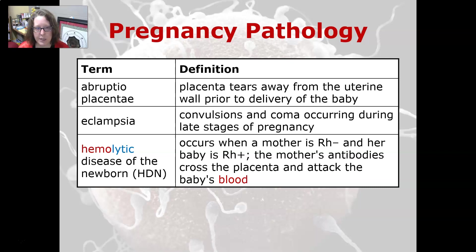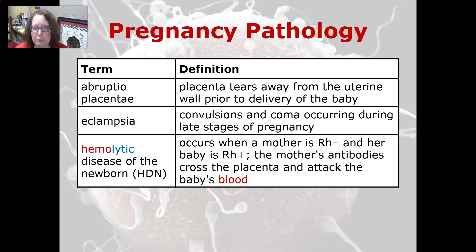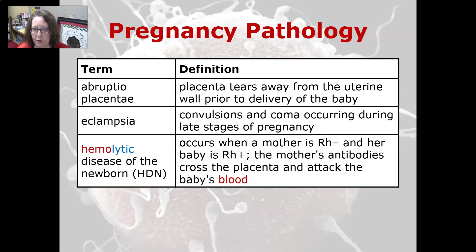Some pregnancy pathology: abruptio placentae is when the placenta tears away from the uterine wall prior to delivery of the baby — this is dangerous because it can cause major bleeding and can cause the loss of the baby and the mother. Eclampsia is a condition where you have convulsions and coma that occur during the late stages of pregnancy. Hemolytic disease of the newborn, or HDN, occurs when a mother is Rh negative and her baby is Rh positive — the mother's antibodies to Rh can cross the placenta and attack the baby's blood.